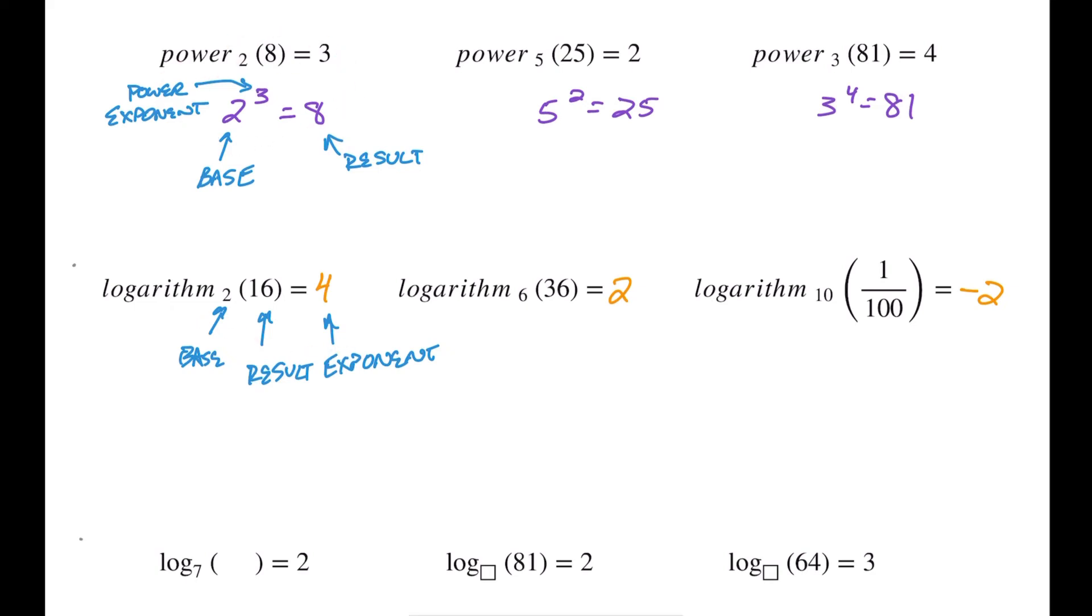So again, just following the same pattern of what we saw up here and breaking it down down here. So if we're looking at log_7 of something equals 2, here this ended up being our base. So log base 7, this was our exponent. Base 7 of something equals 2. Well, I know this is going to be the power of 7, so that's got to be 49.